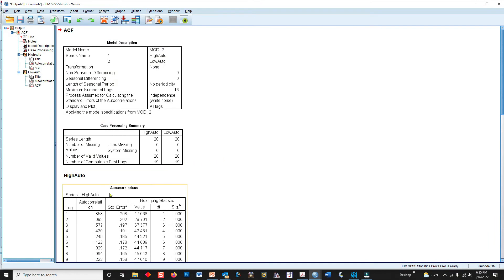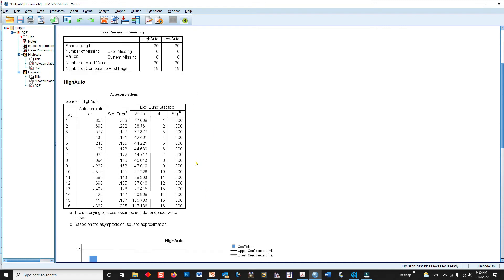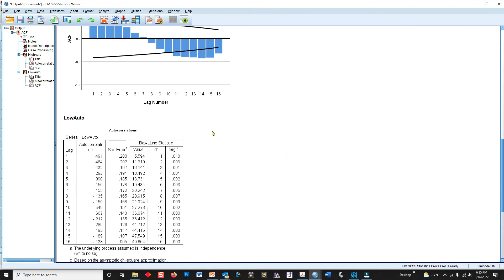So I click OK, and for the high autocorrelation dataset, for the one lag autocorrelation, which is what's normally reported, we have a very high positive autocorrelation of 0.858. And I'm going to ignore all the other information here.